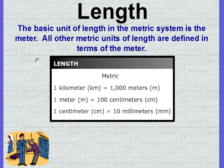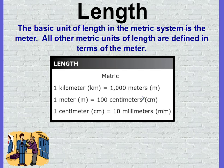Let's talk about the three different measurement categories. The first is length. The basic unit of length in the metric system is the meter — all other metric units of length are defined in terms of the meter. The metric measurements we use in sixth grade are the kilometer, the meter, centimeters, and millimeters.